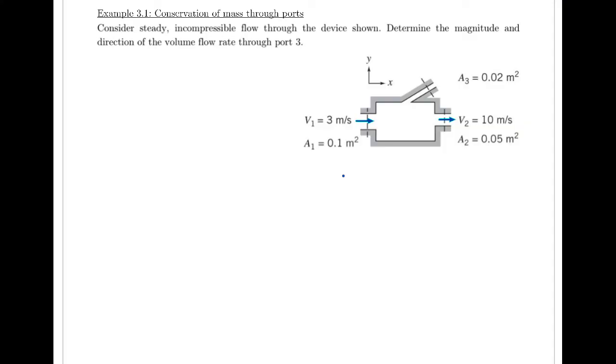All right, in this problem we have steady, incompressible flow through the device shown. We want to figure out the magnitude and direction of the volume flow rate through port three.